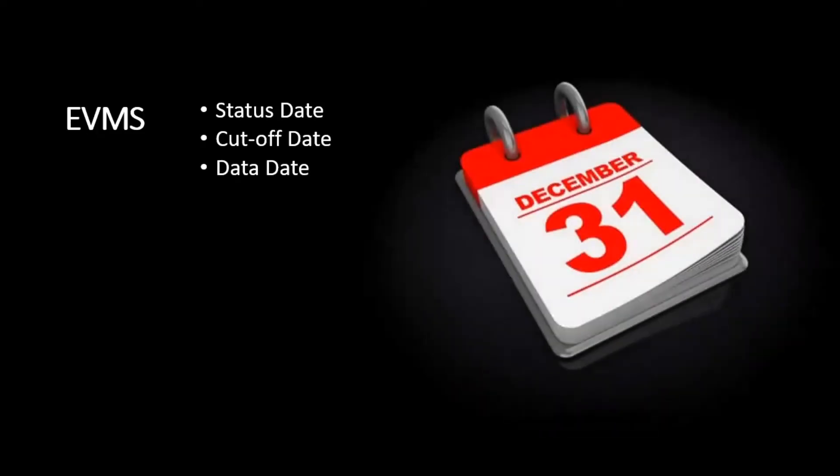First, you must understand what a cut-off date is. Let's say our project starts on 15th December 2019 and ends on 25th April 2020. Today is 2nd January, but I need my report up to 31st December 2019 — that date is called the status date or cut-off date: the date on which you want to know your project status. Data date is the same concept; all three terms carry the same meaning.